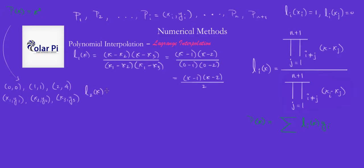L2 of X is going to be X minus X1 times X minus X3 divided by X2 minus X1 times X2 minus X3.